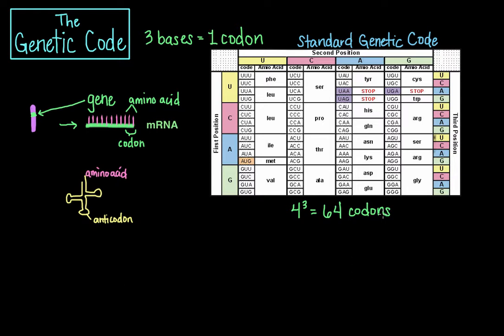All 64 codons are assigned to either an amino acid or a stop signal. For example, if we take an mRNA sequence and the reading frame starts with the first U — because by convention it is read 5' to 3' — there are four codons: UCA, GCA, CGG, and CAG, each of which specifies one amino acid. Therefore, this 12-base RNA sequence will be translated into an amino acid sequence that is four amino acids long.